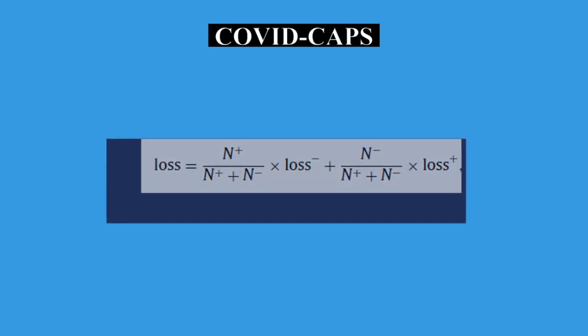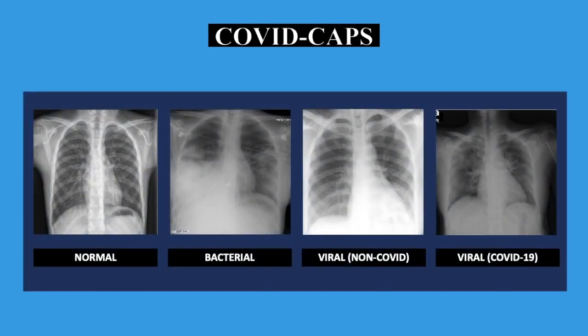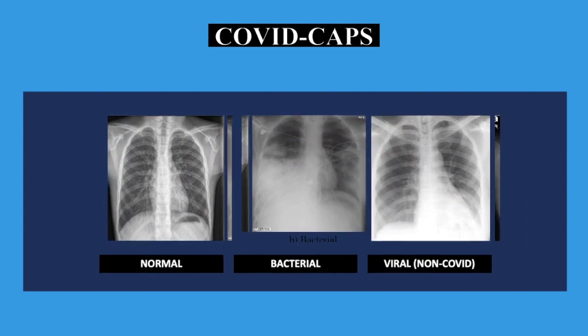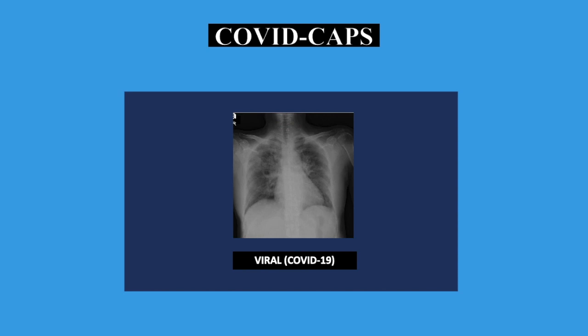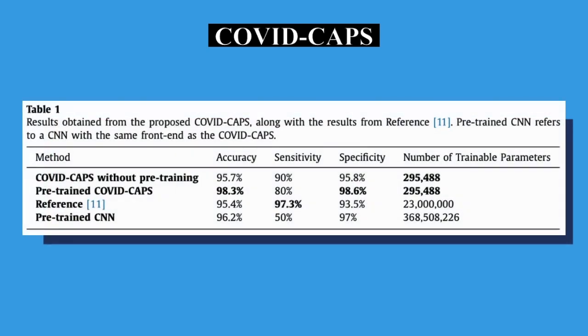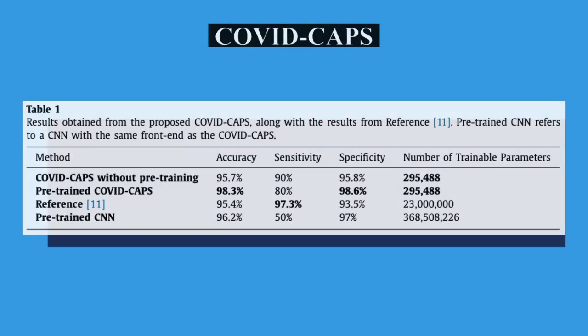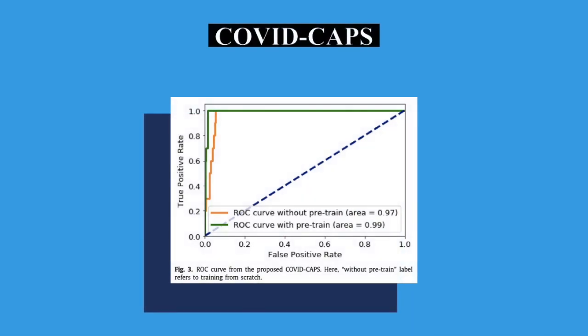The generated dataset contains four labels arranged into two groups: normal, bacterial, and non-COVID viral in the first group, and COVID-19 in the second. COVID-Caps achieved an accuracy of 95.7%, a high sensitivity of 90%, and specificity of 95.8%. Using the pre-trained model improves the accuracy and specificity as the ROC curve shows, with an AUC of 0.99.